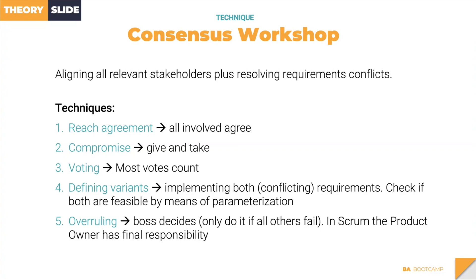The last conflict resolution option is overruling — somebody in charge decides. In Scrum, that's the product owner, who has final responsibility and accountability for the product. Product owners are essentially BAs: a product owner is a special kind of business analyst with the mandate to decide what needs to be done and in what order, after continuously talking with stakeholders.